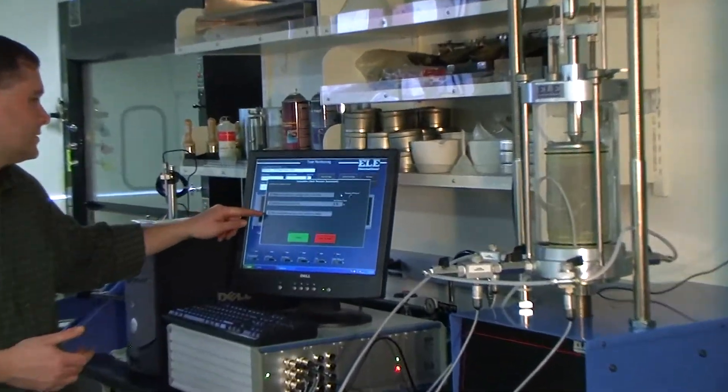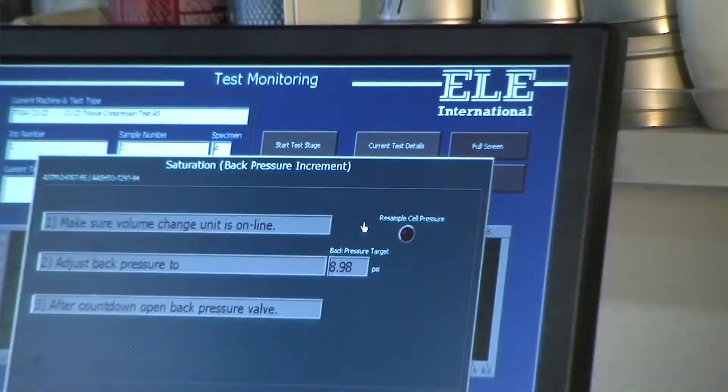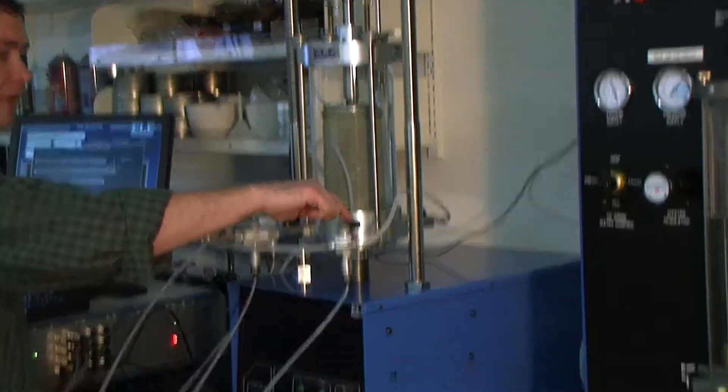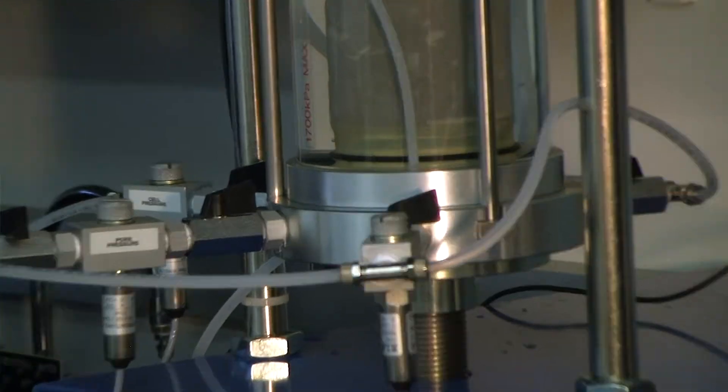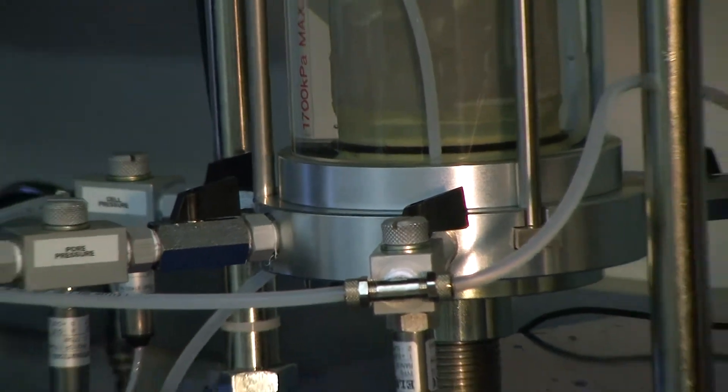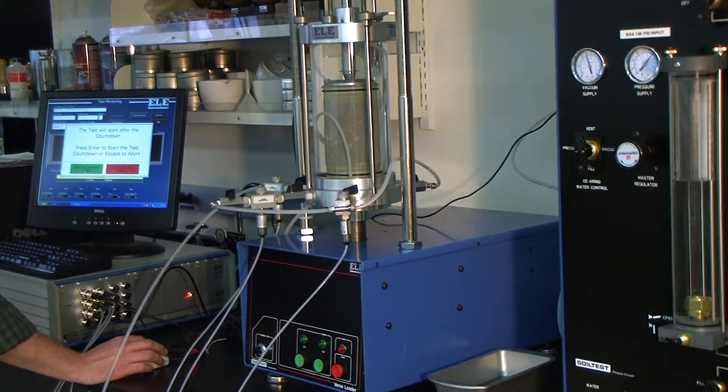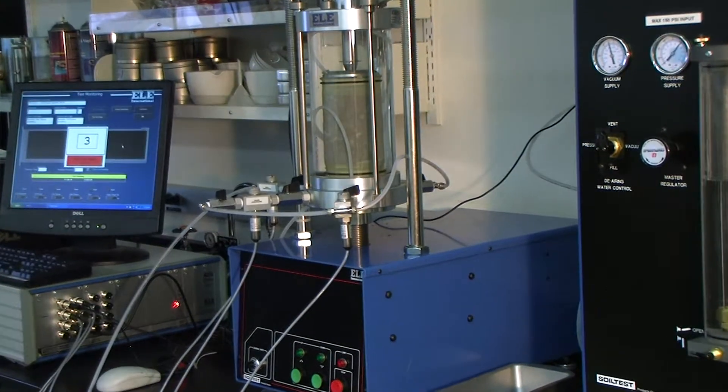So step three is, after the countdown, again a countdown, open the backpressure valve. This is the backpressure transducer labeled right here. This is the backpressure valve. So once the countdown hits zero, open that valve. Hit continue. Start test countdown. 5, 4, 3, 2, 1, then a double beat.